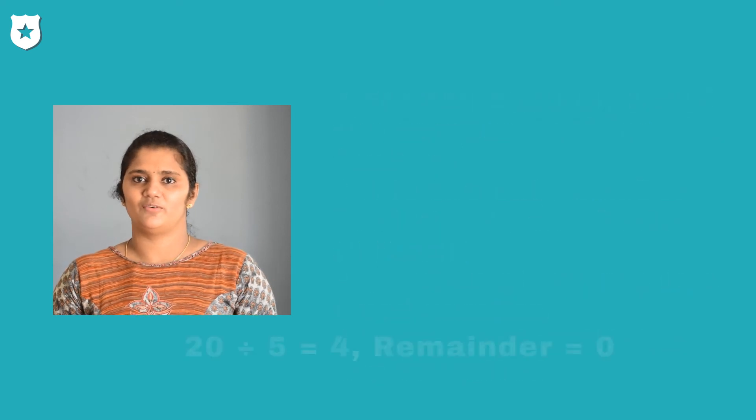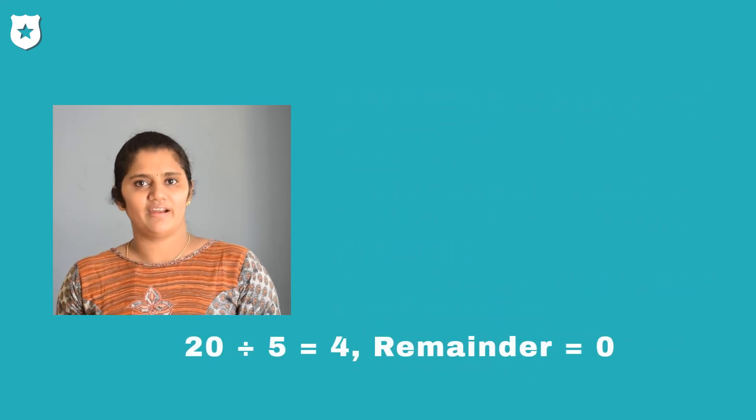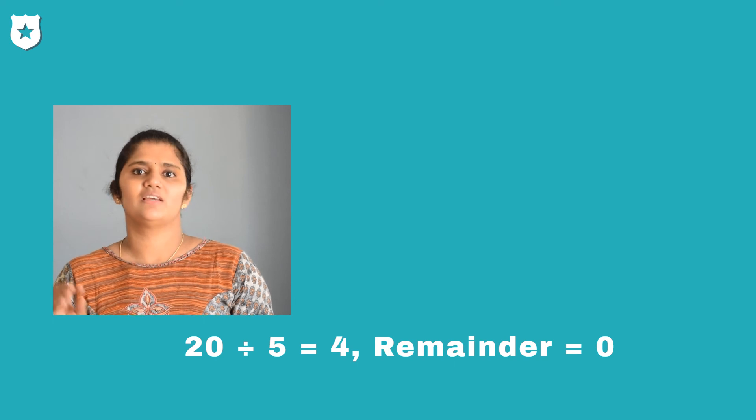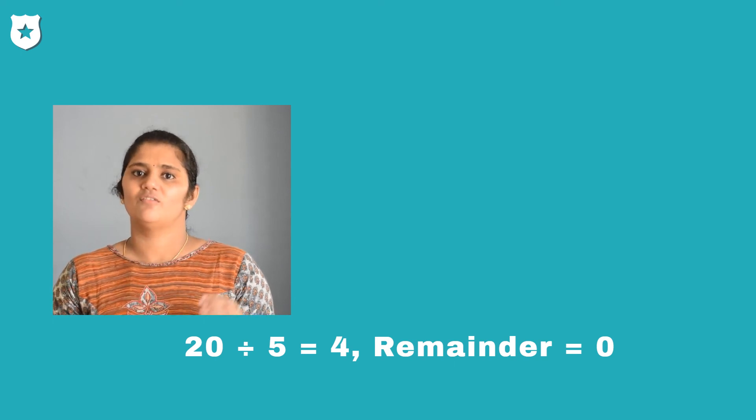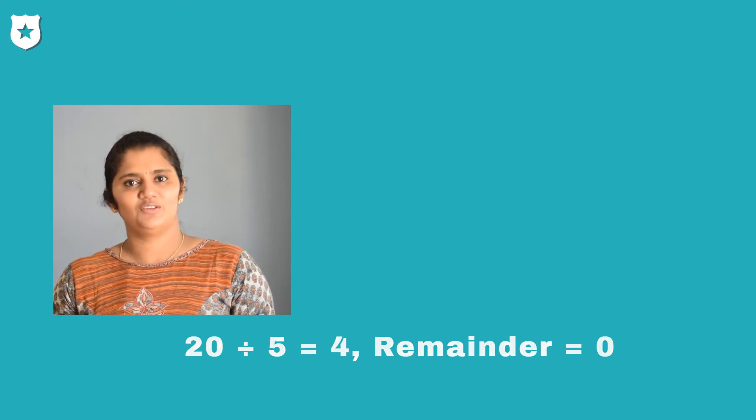Here is an example for you. 20 divided by 5 we get 0 as the remainder. So we can say 5 is a factor of 20. In the next session we will learn prime numbers and composite numbers. I wish all of you a happy learning.